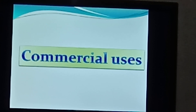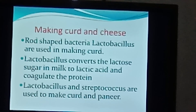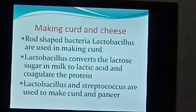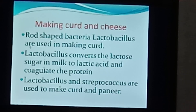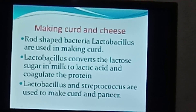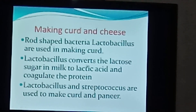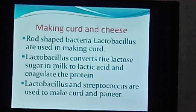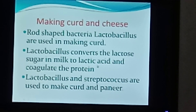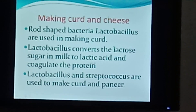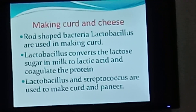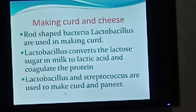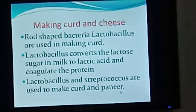Starting with making of cheese and curd. A rod-shaped bacteria called Lactobacillus is used in making curd. Lactobacillus converts the lactose sugar present in milk to lactic acid, due to which the protein in the milk coagulates. Lactobacillus and Streptococcus are used to make curd and paneer commercially.